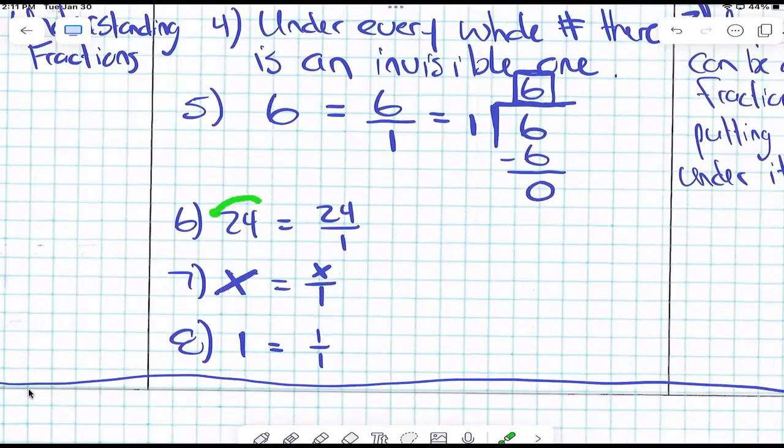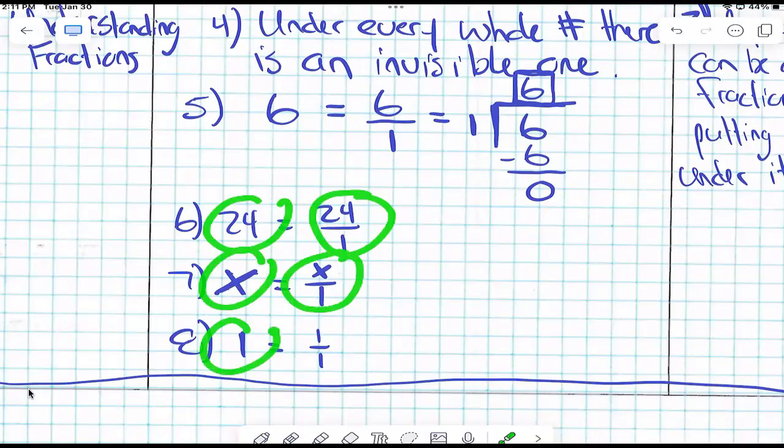So here's an example: 24 can be 24 over 1. A variable can be x over 1. 1 can be 1 over 1. They all can be written as fractions. Really cool.